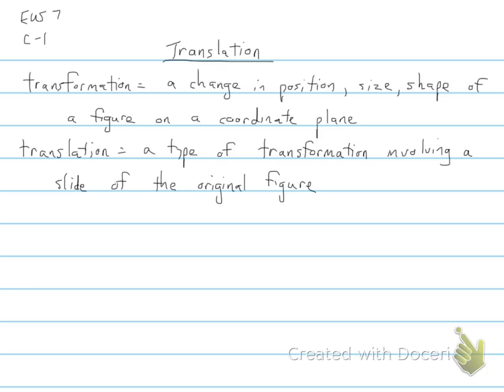The first definition is on transformation, and a transformation is any type of change in position, size, shape of a figure on a coordinate plane. And what we're going to be focusing on, the type of transformation we're focusing on in this lesson, is translation, which involves a slide of the original figure.